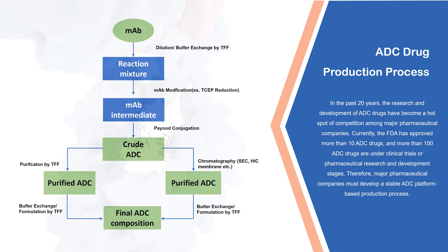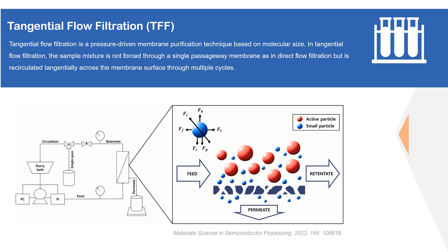The purification process of ADCs can be divided into two categories: tangential filtration, including ultrafiltration or diafiltration, and chromatography-based methods. The ultrafiltration/diafiltration technique of tangential flow filtration has been widely used for ADC drug purification. A suitable process buffer is usually required for monoclonal antibody conjugation due to the removal of organic impurities, conjugate impurities, and waste buffers. The yield of the ultrafiltration or diafiltration technique for ADC purification can be maintained above 90%.